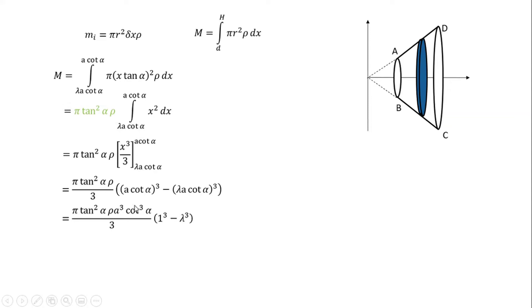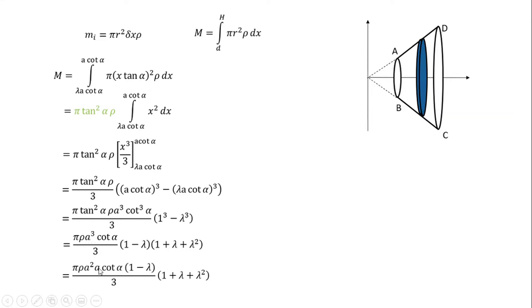If you have a quad alpha cube, 1 over tan alpha is equal to cot alpha. So pi rho a cube cot alpha. If you have cot alpha, 1 over lambda plus lambda is equal to cot alpha. That is pi rho a squared into h divided by 3 times 1 plus lambda plus lambda squared.